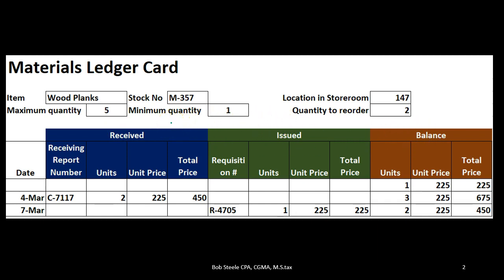Received means we purchased it and have received it — this is when we're getting the inventory. Issued would be similar to our sales item or cost of goods sold for a merchandising company, but in this case we're not selling it — it's not leaving the company. It's going to another department, from our warehouse to the production department, to the factory, to work in process. Then we have the balance, which is what's on the balance sheet as of the ending period.